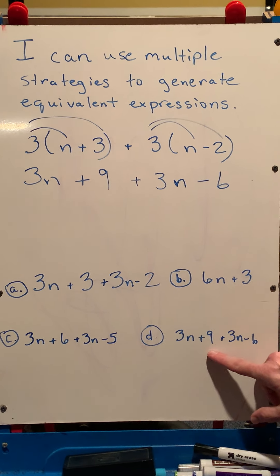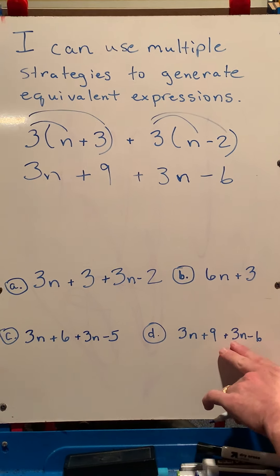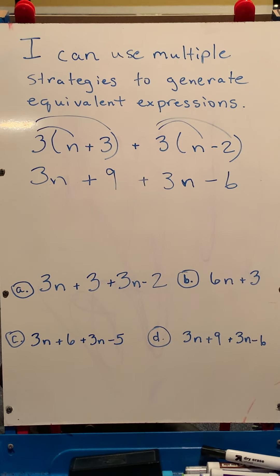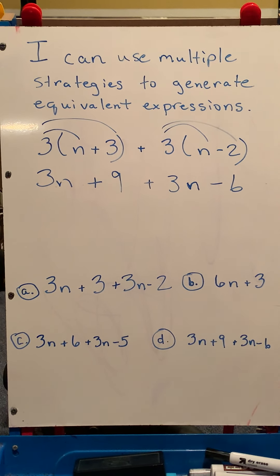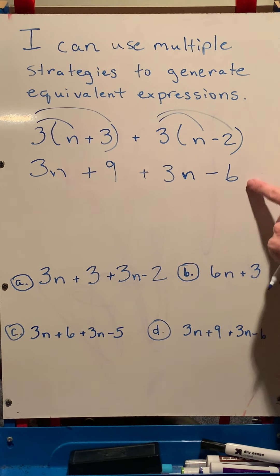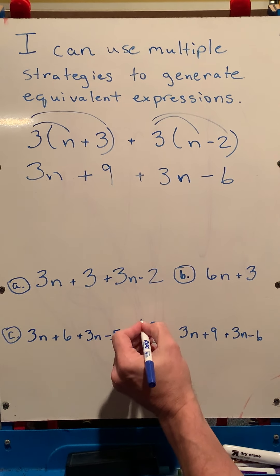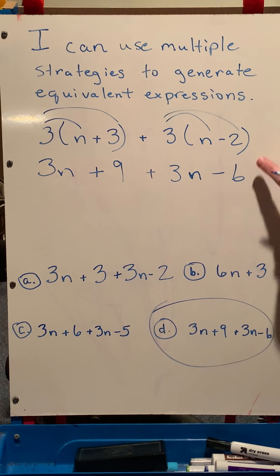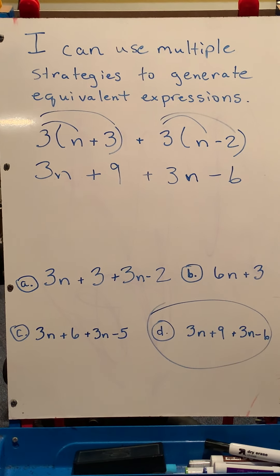And when I look at D, 3n plus 9 plus 3n minus 6, I already have found one correct answer. Because when I have it in this form, before I combine like terms, it is the same. So this and this are equivalent. So I'm going to go ahead and circle D. That is a correct answer because we proved it right there. It's exactly the same.